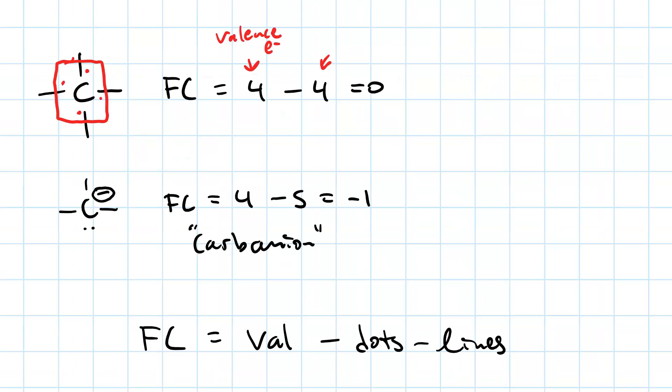A quick way to remember how to calculate formal charge is to use the formula: formal charge equals valence, which is the number of valence electrons in the free atom, minus the dots minus the lines. Now the dots represent the lone pairs and the lines represent the bonds. And valence is, of course, referring to the free atom.